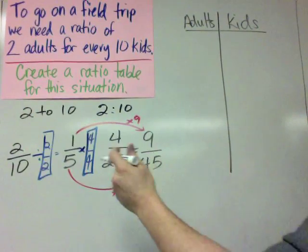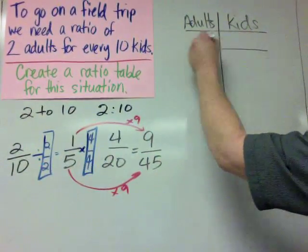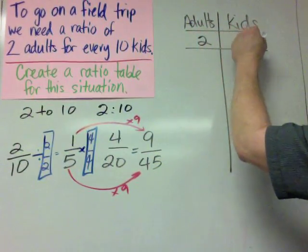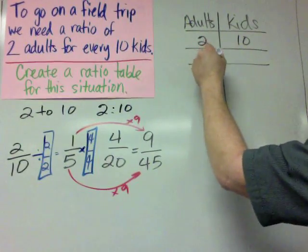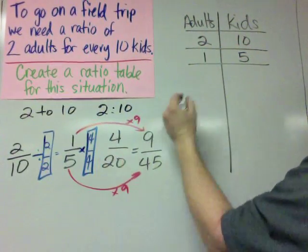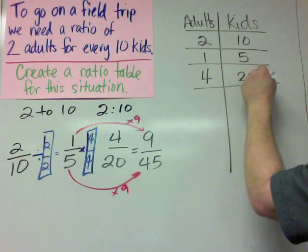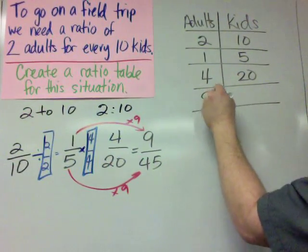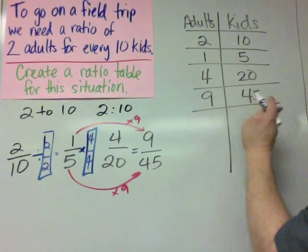So we're going to talk about adults and kids. And then we can just take these ratios and put them in this table. So you have 2 adults, 10 kids. We have 1 adult, 5 kids. We have 4 adults, 20 kids. And we have 9 adults and 45 kids.